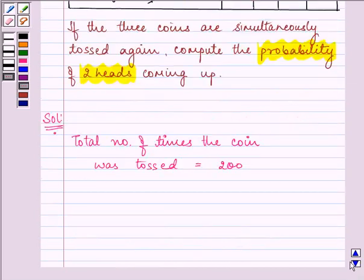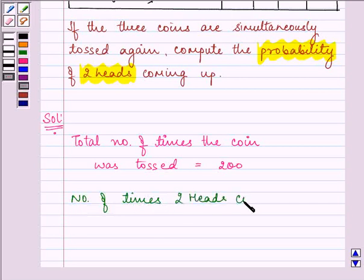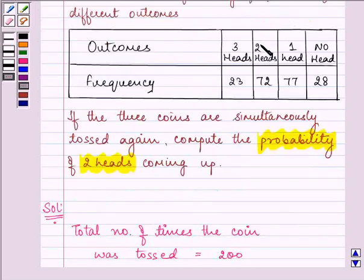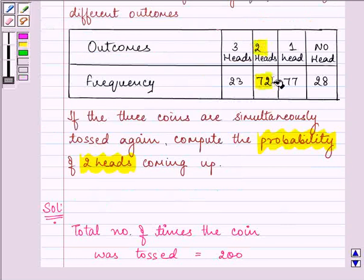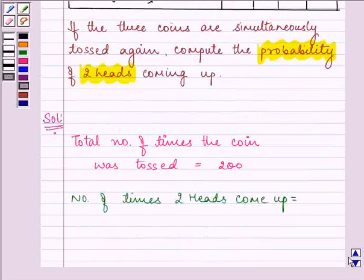Now, number of times 2 heads come up is equal to, 2 heads are coming up 72 times out of 200. So that is equal to 72.